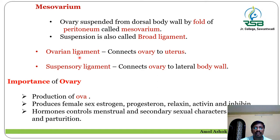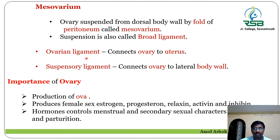The ovarian ligament connects the ovary with the uterus, which is the part of the internal genitalia we will study in detail in the next slides. The suspensory ligament connects the ovary with the lateral body wall.